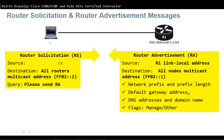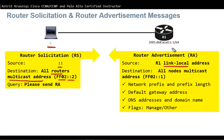For Router Solicitation, the source is an unspecified address (double colon), and it is sent to the all-routers multicast address FF02::2, asking the router to send a Router Advertisement. The Router Advertisement is sent every 200 seconds or in response to a Router Solicitation. Its source is the router's link-local address and the destination is the all-nodes multicast address FF02::1. All IPv6 devices, including routers, are members of the all-nodes multicast group FF02::1, while only routers are members of FF02::2.